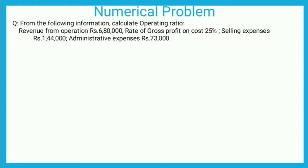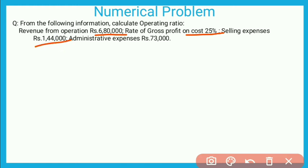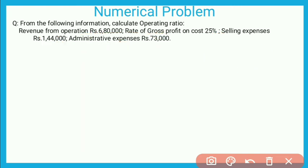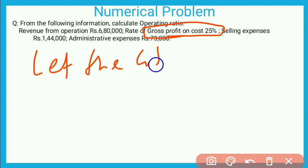Now see one more question. From the following information, calculate Operating Ratio: Revenue from Operations = ₹6,80,000; Rate of Gross Profit on Cost = 25%; Selling Expenses = ₹1,44,000; Administrative Expenses = ₹73,000. Selling और administrative को add करेंगे तो operating expenses आ जाएगा। Cost find करने के लिए clue दिया गया: Gross Profit 25% on cost।